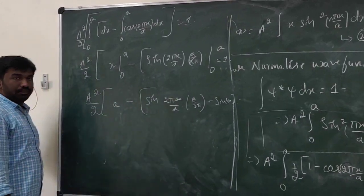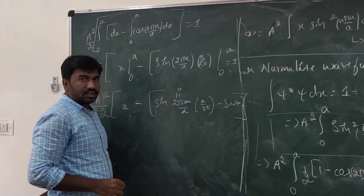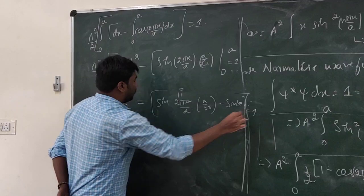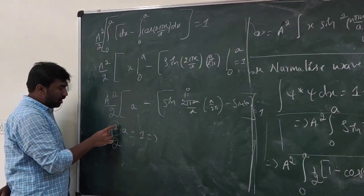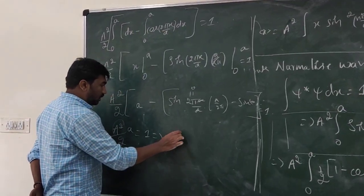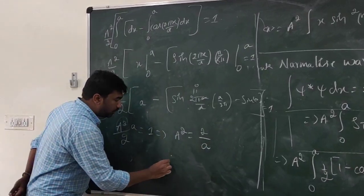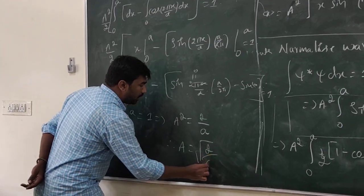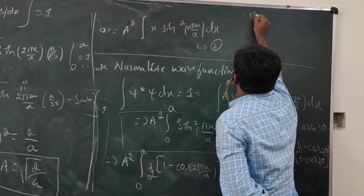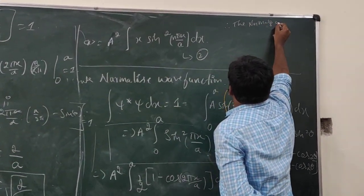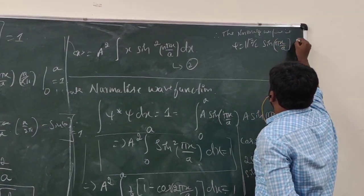Now sin(2πa/a) = sin(2π) = 0, and sin(0) = 0, so the sine terms vanish. The remaining value is A² by 2 times a equal to 1, giving A² = 2/a, so A = √(2/a). The normalized wave function is therefore ψ = √(2/a) sin(πx/a).